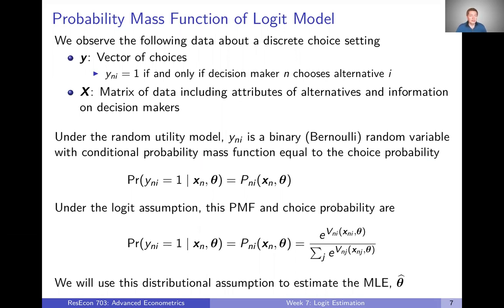The idea here is that we observe the following data about a discrete choice setting. We observe a vector of choices — for every decision maker, which alternative are they choosing. We can think about that as a set of 0s and 1s: y_ni equals 1 if and only if decision maker n chooses alternative i, and 0 for all other alternatives they do not choose. This is our outcome variable, this 0/1 indicator for what alternative is chosen.